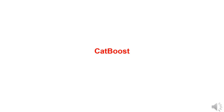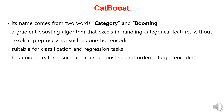In this video, we will learn about one of the boosting models, CatBoost, and implement it through coding. The name CatBoost is derived from the words 'category' and 'boosting.' It is an excellent boosting algorithm for handling categorical features without explicit pre-processing like one-hot encoding, making it suitable for both classification and regression tasks.